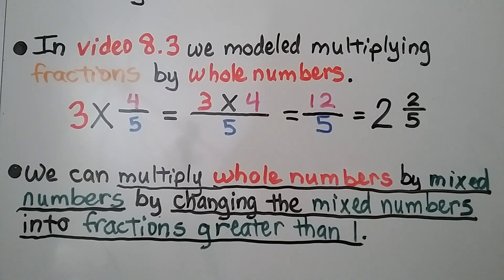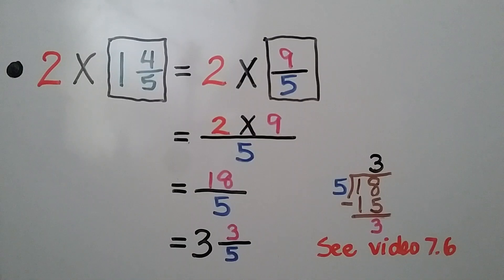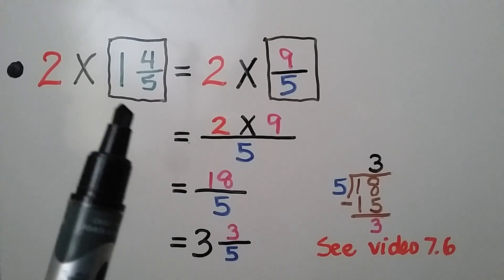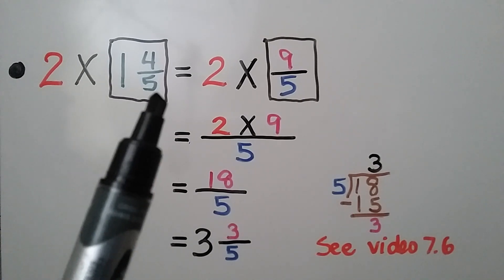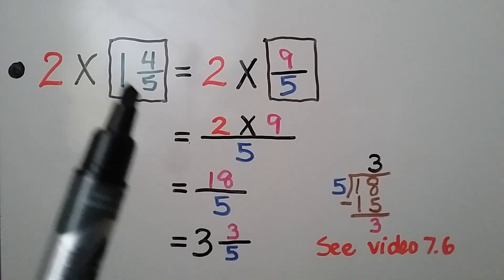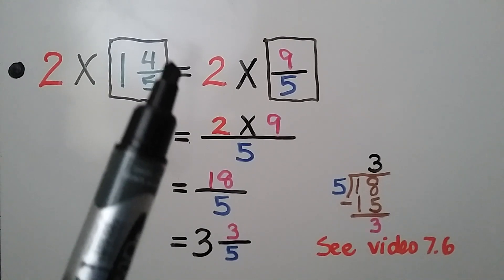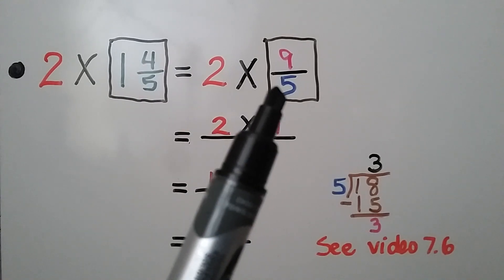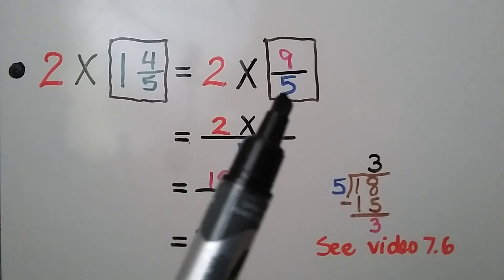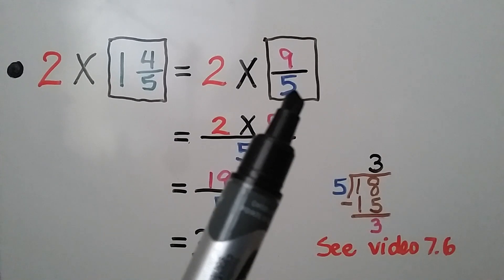We can multiply whole numbers by mixed numbers by changing the mixed numbers into fractions greater than 1. Here we're multiplying a whole number 2 by a mixed number 1 and 1 fourth. We multiply the 1 times 5 — the whole number 1 to the denominator — we get a 5, and we add the numerator 4. We get a 9, and we write it over that denominator. As a fraction greater than 1, it becomes 9 fifths.